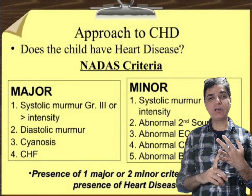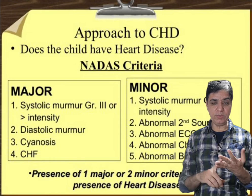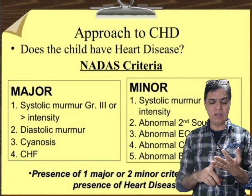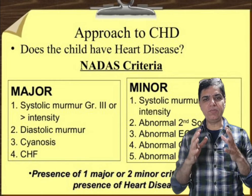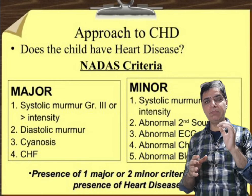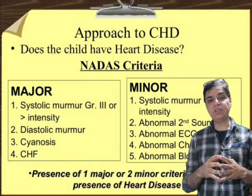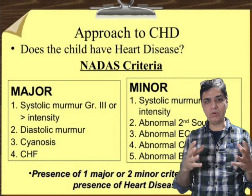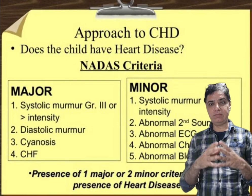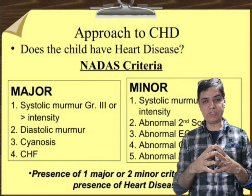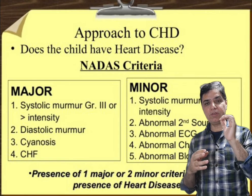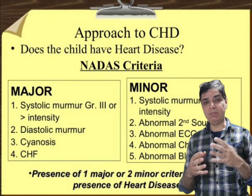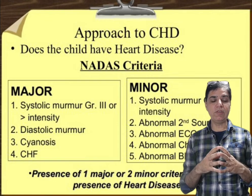The third minor criterion is an abnormal ECG — a child with SVT, a prolonged QT interval, or depressed ST segment. Any type of abnormality found on ECG satisfies this minor criterion. The fourth is an abnormal chest X-ray, such as cardiomegaly, plethoric lung fields, or oligemic lung fields. The fifth is abnormal blood pressure, whether abnormally low or abnormally high.